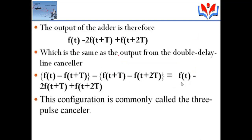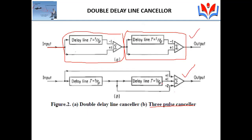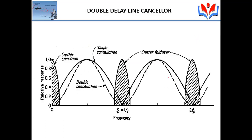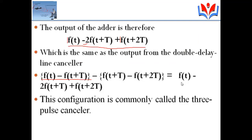The output of the three pulse canceller has weightages: minus 2 for the one-delayed term, plus 1 for the two-delayed term, and plus 1 for the direct input. The response of the three pulse canceller is equal to the response of the double delay line canceller. These two representations are equivalent — their frequency responses are the same.